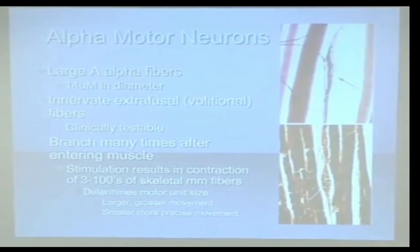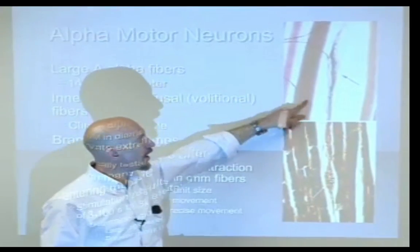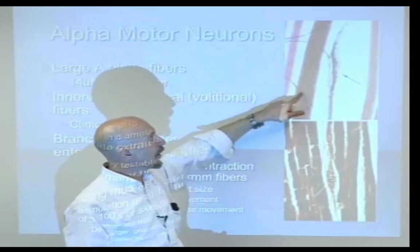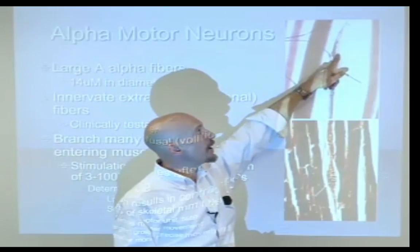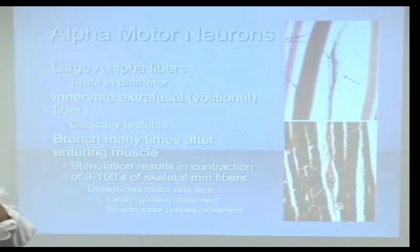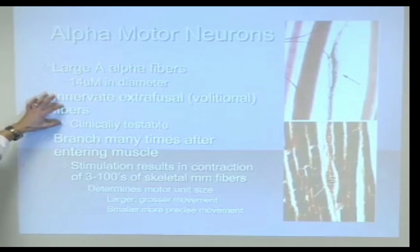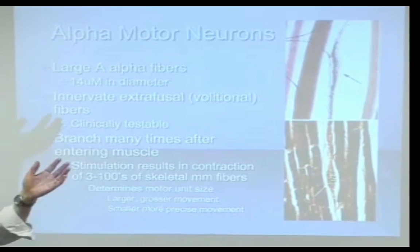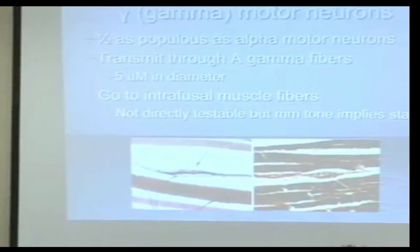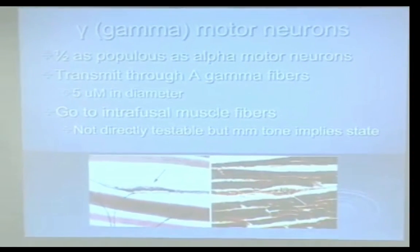Alpha motor neurons go to the muscle fiber — here's the actual alpha motor neuron, and here's a spindle with a gamma motor neuron. We have two kinds of motor neurons: alphas and gammas. Alphas go to extrafusal fibers, and these are the ones you can test. Once they enter a muscle they branch multiple times, and that creates a motor unit — the nerve and all the muscle fibers it innervates. Small motor units are in fine manipulative muscles like the hand and eyelids; large motor units are in things like the erector spinae.